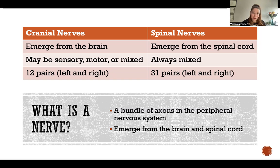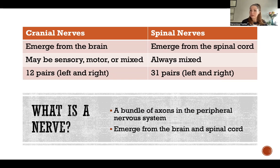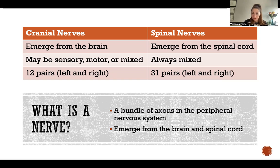Cranial nerves — there are 12 pairs. When we say pairs, we mean that there's a left and a right. And spinal nerves — there are 31 pairs, so a left and a right.